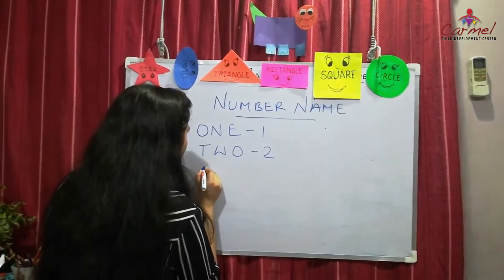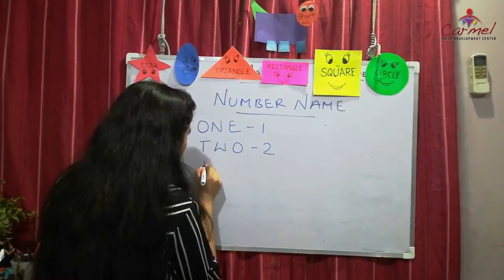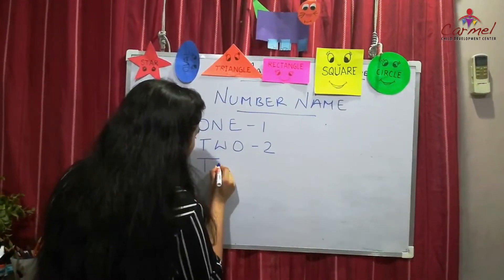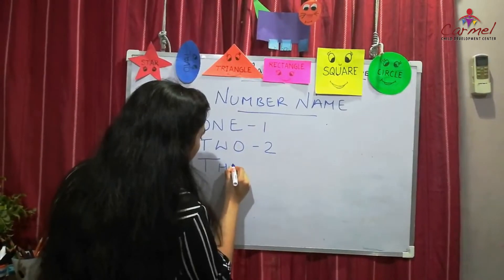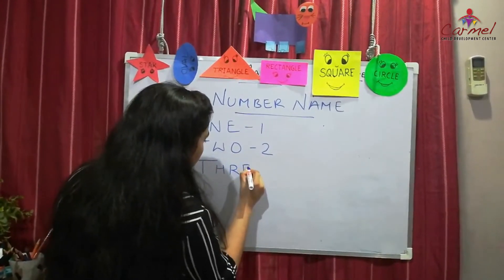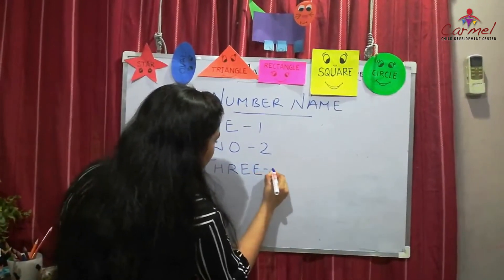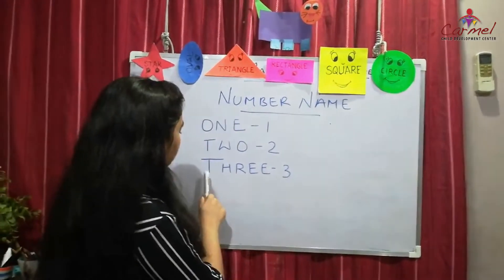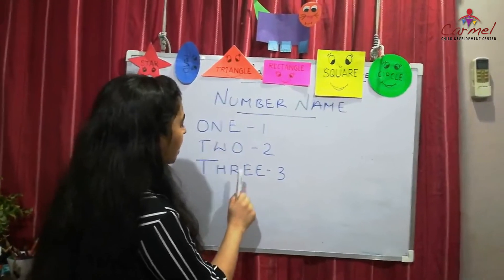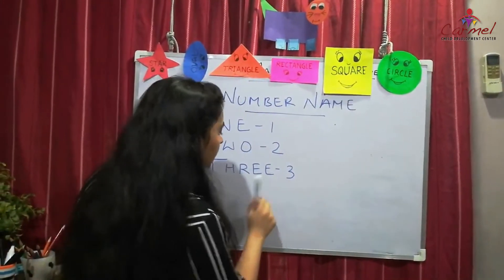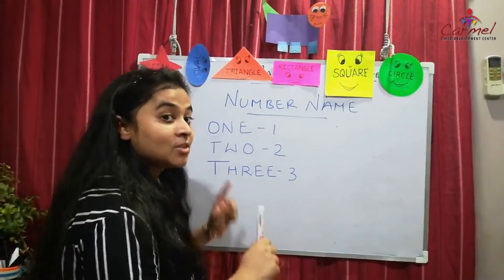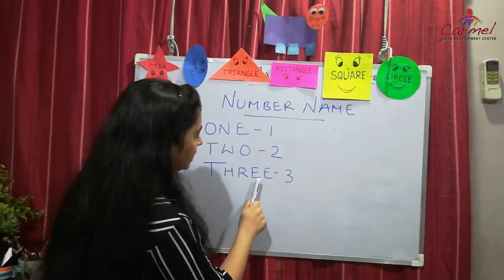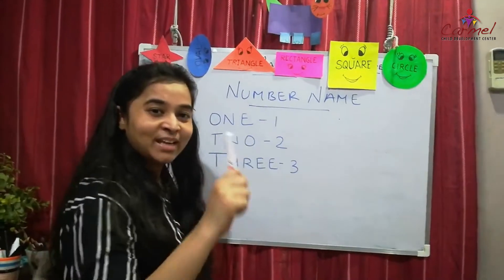Very good. Now let's write number 3. T, H, R, E, E — three. Repeat after me: T, H, R, E, E — three. Say it again: T, H, R, E, E — three.